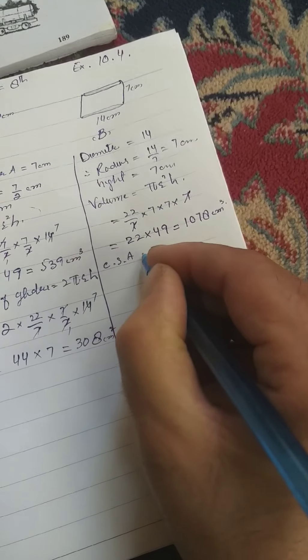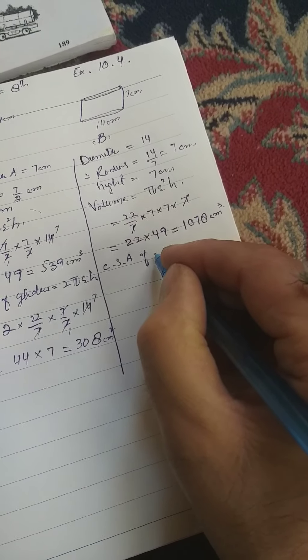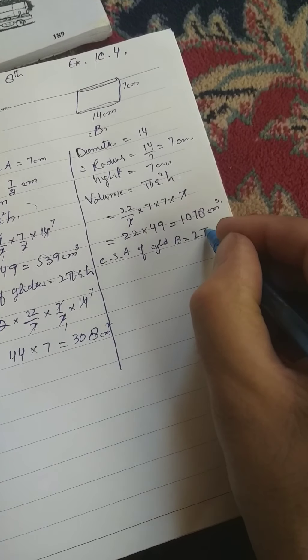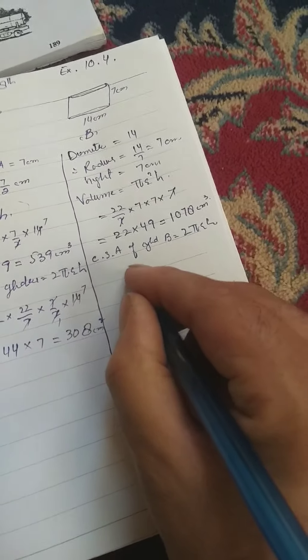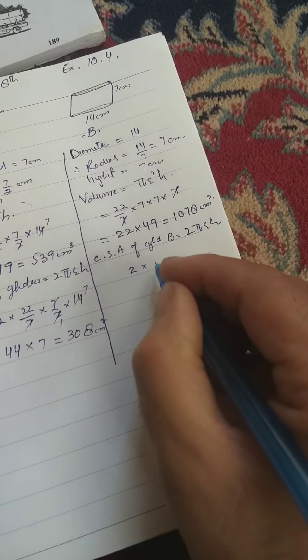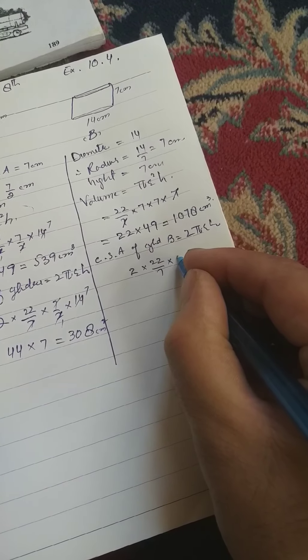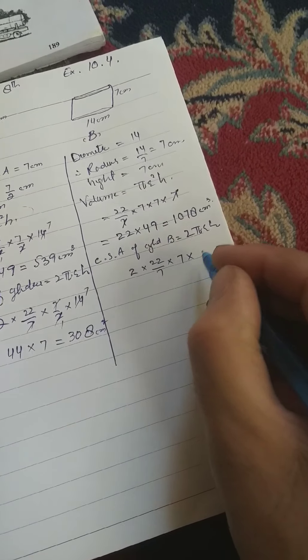Now curved surface area of cylinder B, cylinder B, 2πrh. 2 is equal to 22 divided by 7 and radius is 7 and height is also 7.